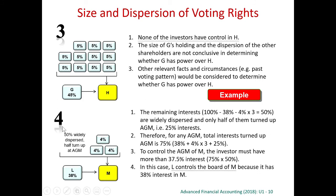In scenario 4, L has got 38% of M. 38% is not more than 50%, so we cannot say that L has the power. Considering other facts and circumstances, there are three substantial shareholders, each with 4%. We expect they may attend the AGM. But all the other 50% of shareholders are widely dispersed with less than 1%, and from past experience, only about half of them actually attend the AGM. This past experience record may be important.